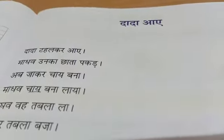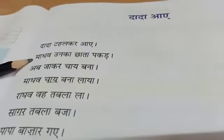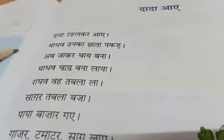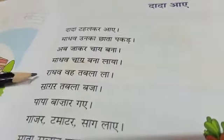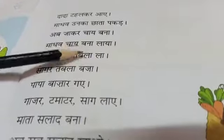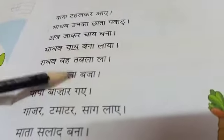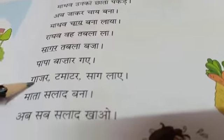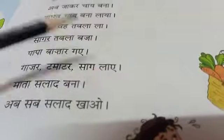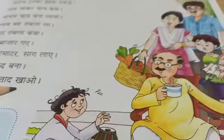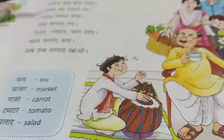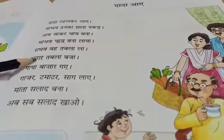Now come to the poem: Dada Dada - Dada Dada teller kar ae, Madhav unka chhata pakat, Aak jaakar chai bana, Madhav chai bana laya. Raghav tabla laya, Saagar tabla baja, Papa bazaar gai, Gajar tomato saag lai, Mata salat bana, Ak sab salat khao salat.